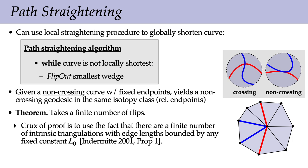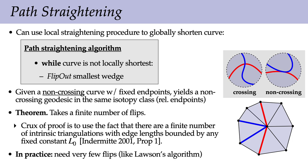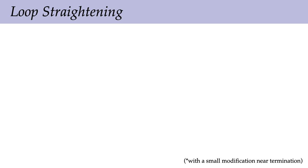An important theorem about this algorithm is that it finishes in a finite number of operations. The crux of this proof is that there are a finite number of intrinsic triangulations with edge lengths bounded by any fixed constant L0 — you could take L0 to be the length of the initial path. Interestingly, this same fact is what lets you prove that the intrinsic Delaunay flipping algorithm also finishes in a finite number of operations — it seems to be a pretty fundamental result about intrinsic triangulations. In practice, just like the Delaunay flipping algorithm, we need very few flips to reach the locally shortest geodesic curve.